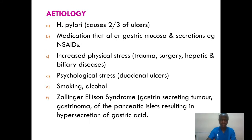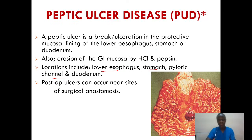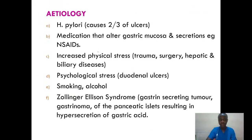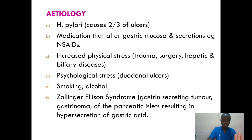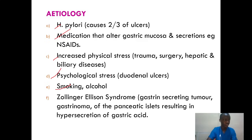What are the risk factors that might predispose one to the break in the protective mucosal lining? One, H. pylori, which causes two-thirds of all ulcers. Two, medications that alter gastric mucosa, such as NSAIDs. Three, increased physical stress — from trauma, surgery, hepatic and biliary diseases. Then psychological stress, which commonly causes duodenal ulcers. Then smoking and the use of alcohol. The key ones are H. pylori, NSAIDs, increased physical stress, psychological stress, smoking, and alcohol.